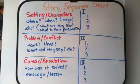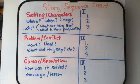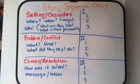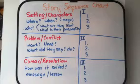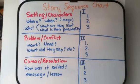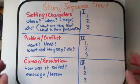The second paragraph is going to be the problem or conflict. What do the characters want or need? What are they saying about what they want or need, and what do they do about that? The third paragraph is the climax or resolution — how was their problem solved, and what is the message or lesson that they learned?